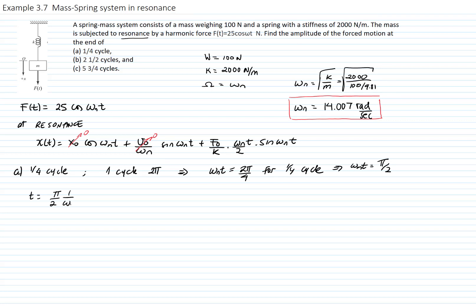The time would be equal to π over 2ωₙ, which equals π over 2 times 14.007. Time equals 0.01121 seconds. Plugging this into my response, I get the value of 0.0098 meters.